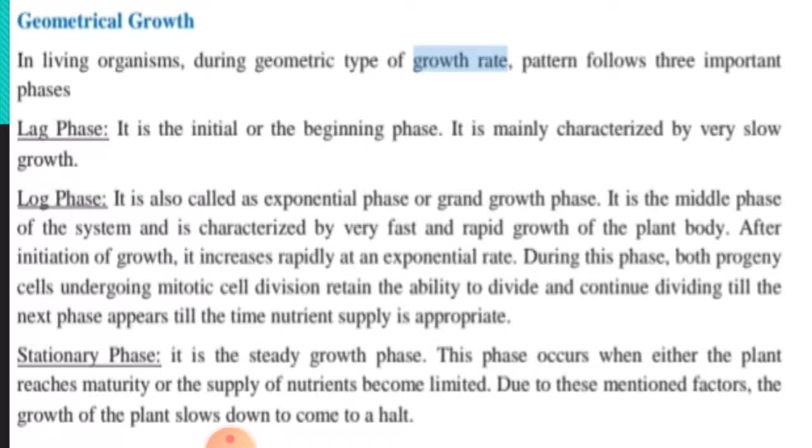The third phase is the stationary phase. It is the steady growth phase. This phase occurs when either the plant reaches maturity or the supply of nutrients becomes limited. Due to these mentioned factors, the growth of the plant slows down to come to a halt.